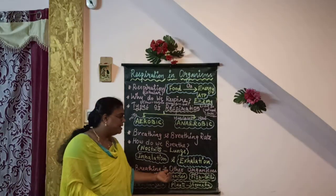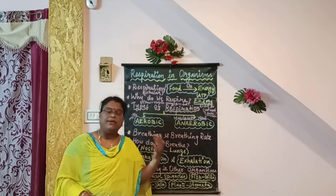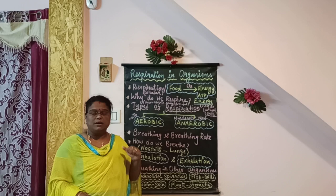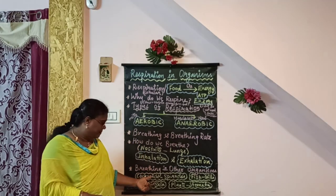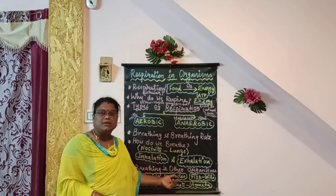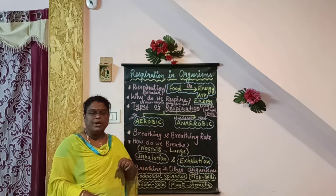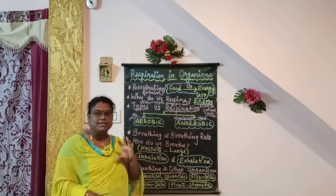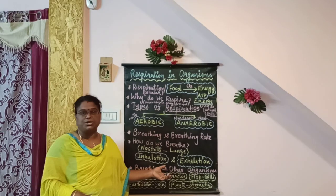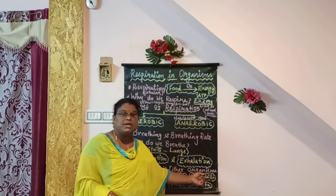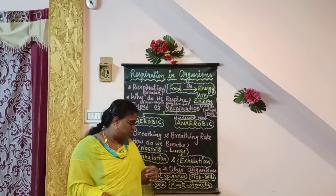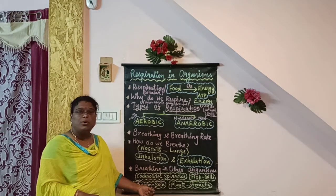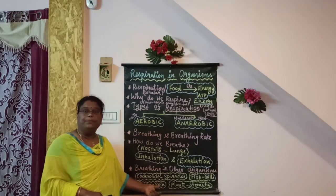Coming to the last topic: breathing in other organisms. In organisms like elephants, lions, and tigers, the breathing organ is the lungs and respiration takes place like in human beings. In cockroaches, the breathing organ is spiracles — small pores present on the sides of the body. Most insects have spiracles as their breathing organ and also contain a network of tubes for gaseous exchange. Fish breathe through gills, which have the ability to pick up oxygen dissolved in water. Earthworms breathe through their skin, which is kept very moist.